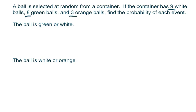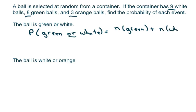So basically we're going to do a probability of green or white, which equals the number of green, plus, because or means plus, number of white over the number in your sample.